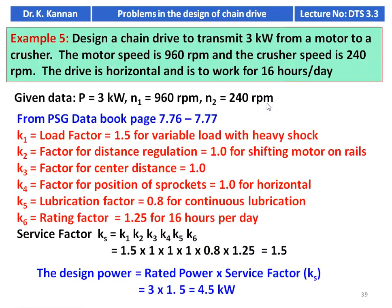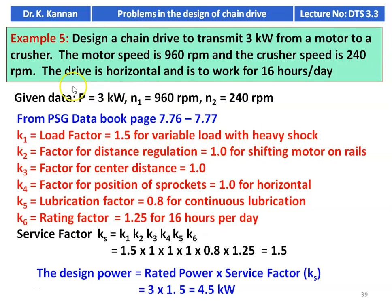Next question, example number 5: design a chain drive to transmit 3 kilowatt from a motor to a crusher. The motor speed is 960 rpm and the crusher speed is 240 rpm. The drive is horizontal and is to work for 16 hours per day. From the PSG data book pages 7.76 to 7.77, load factor K1 = 1.5 for variable load with heavy shock — the application is a crusher, so the shock will be heavy.